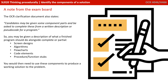A quick note from the exam board: the OCR Clarification Document states candidates may be given some component parts and be asked to complete these from a written description or pseudocode for a program. So in the exam you may be given a description of what a finished program should do alongside complete or partial screen diagrams, algorithms, flowcharts, code elements, or various procedure or function stubs. You would then need to use these components to produce a working solution to the problem.